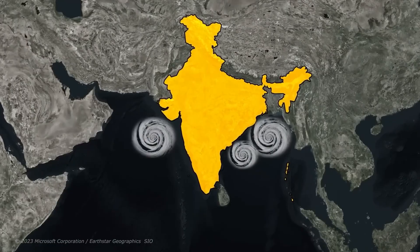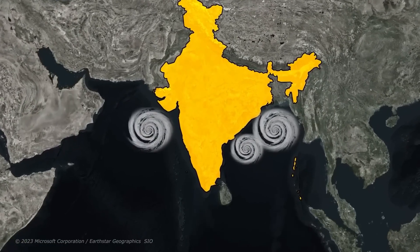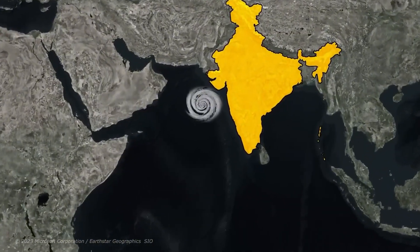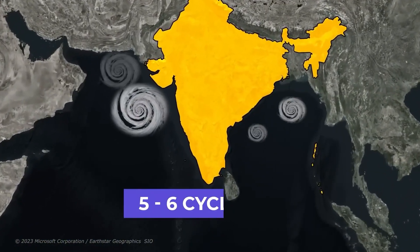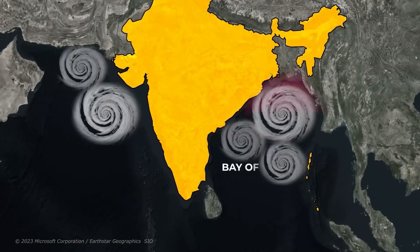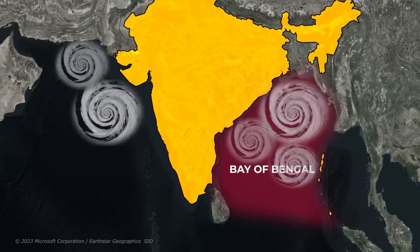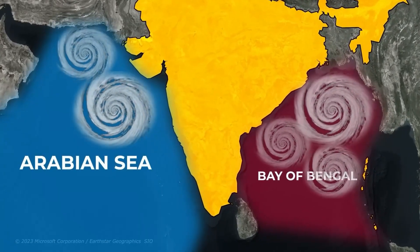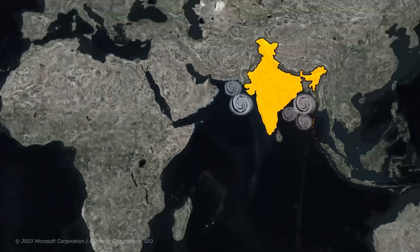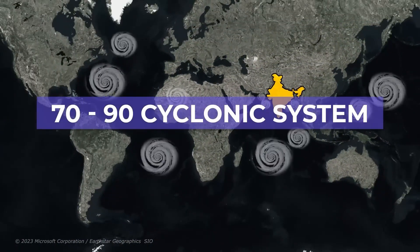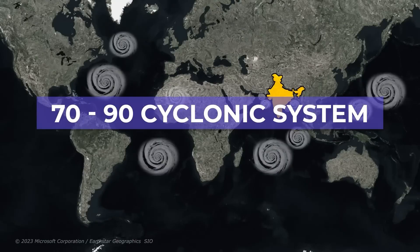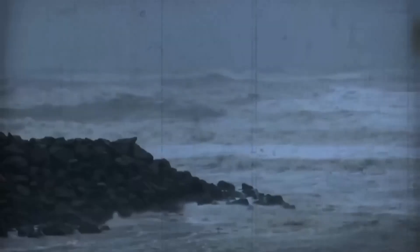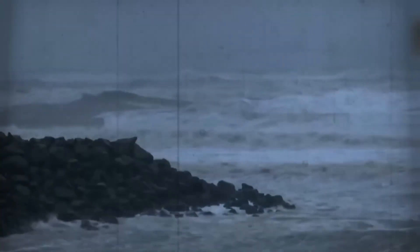Let us understand how many cyclones come to India. Every year in the Indian subcontinent, 5 to 6 cyclones form and most of them are seen in the Bay of Bengal. However, due to climate change, the formation of cyclones in the Arabian Sea is also increasing. Globally, about 70 to 90 cyclonic systems are generated every year. These cyclones bring heavy rainfall and storms, which cause massive destruction in coastal areas.